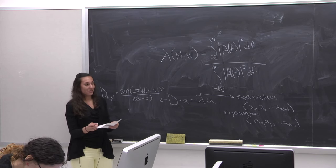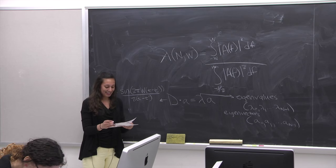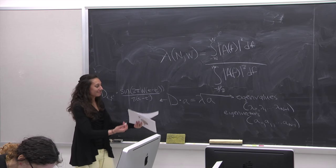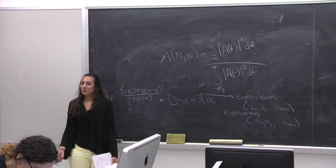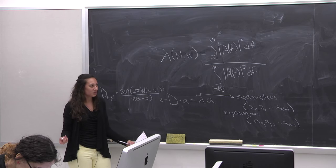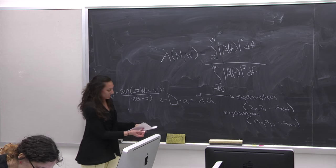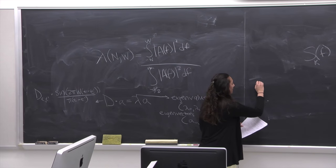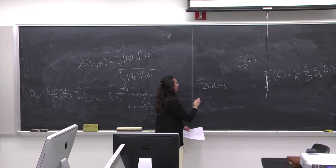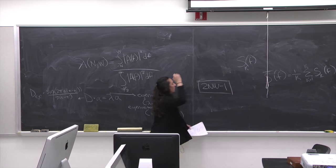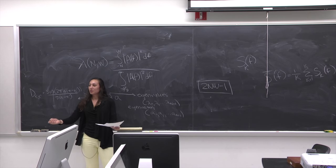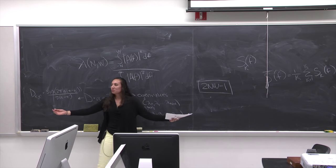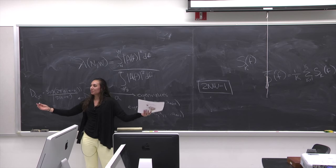The first taper is going to be really good, but the question is how many do we use? A good rule of thumb is 2NW − 1, where N is the number of points in your power spectrum and W is your bandwidth. This is a nice general number — a good place to start, because more than that and you start getting too much bias, too much leakage.